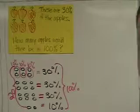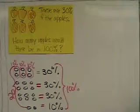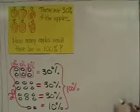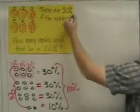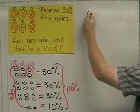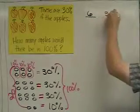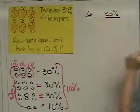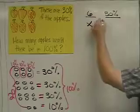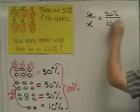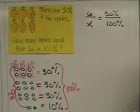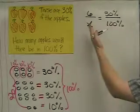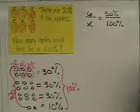Another way to do it is to use proportions, and here's what we could say. We could say, well, six apples equals 30%, and the question is, how many apples equals 100%? So, now we can solve this just like a proportion problem.